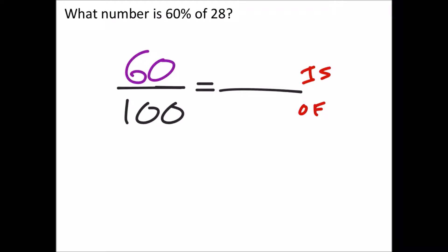It said it's of 28, which means that it's going to go in the denominator here. Meaning the 28 is the whole because it's the part over the whole. And we're going to solve for x in this case.